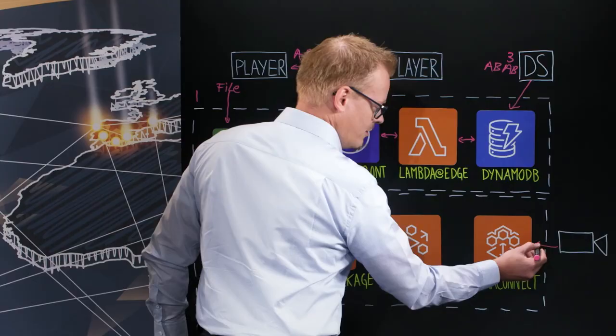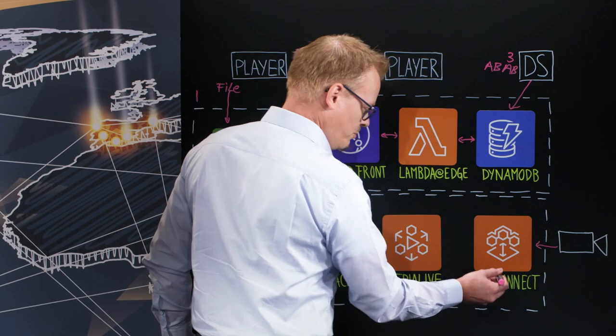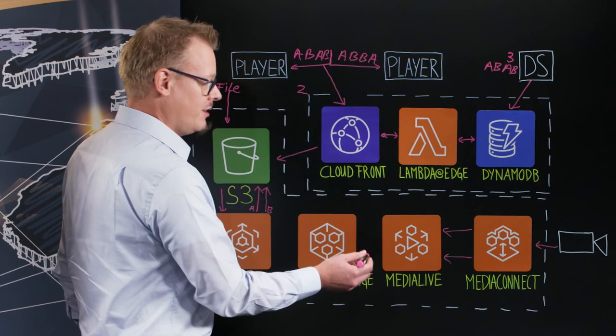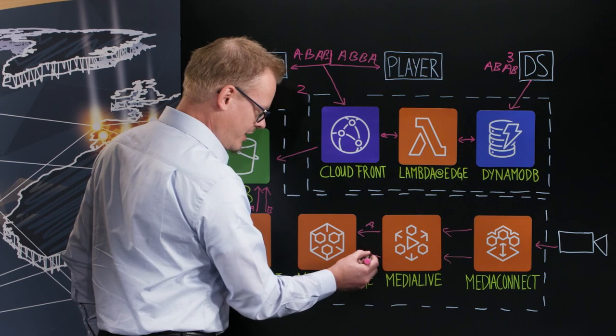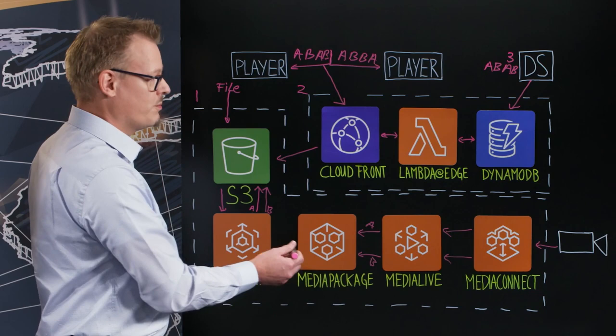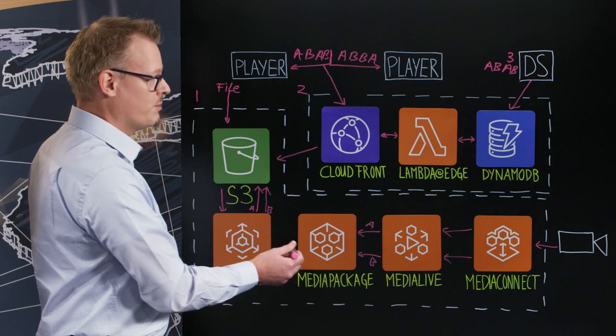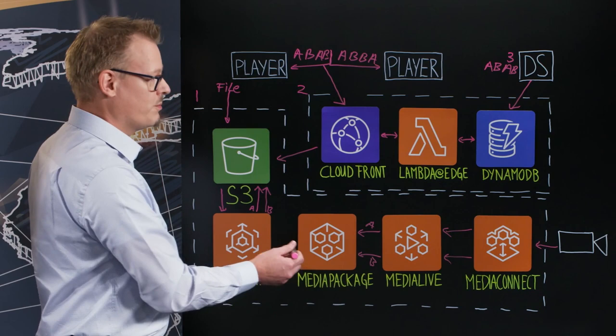For live content, the input is a live feed that goes into MediaConnect, which splits the feed into two. Then MediaLive — where the encoding takes place — has two channels: one channel is the A variant and the other is the B variant, and this is where the watermark is inserted. MediaPackage then prepares it for internet distribution and serves as the origin for CloudFront.